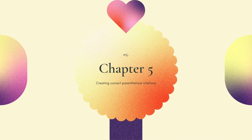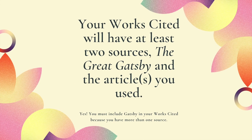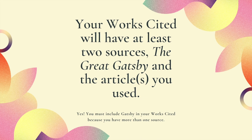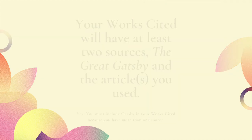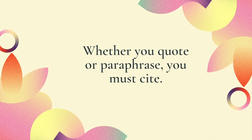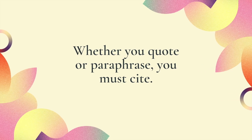Chapter 5. Now you've got your research done and your Works Cited entries created. You've got to make sure your parenthetical citations correlate to your Works Cited entries. You've got at least two sources — the article and the book, maybe more. In past writing about literature you may not have needed to add a Works Cited for the literary text, but it's really important when using more than one source to have a list of all the works you cited. Whether you quote or paraphrase, you must cite.